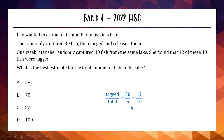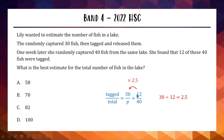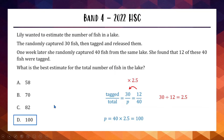For the population, tagged out of total is 30 over P. For the second pick, 12 out of 40. We need the scale factor: 30 divided by 12 is 2.5. So multiply the denominator 40 by 2.5 as well, giving us 100. The total population is 100 — option D — for one mark.